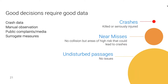From there, we've got public complaints and media — another very powerful method of collecting data in terms of road safety. The challenge, similar to crash data, is that it is a lag indicator. I've noticed that in the realm of road safety, public complaints and media exert significantly more pressure than they do in the world of traffic signal retiming. The gravity that public complaints carry in road safety is so much stronger, because the loss of life is at stake.